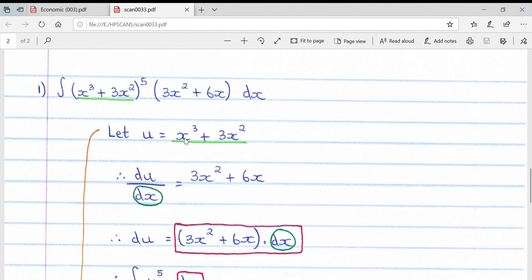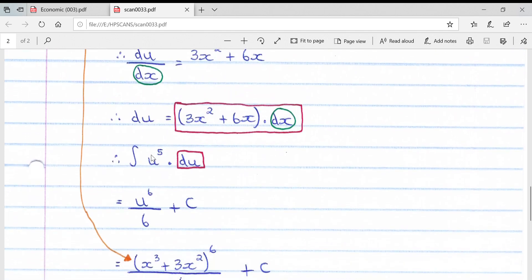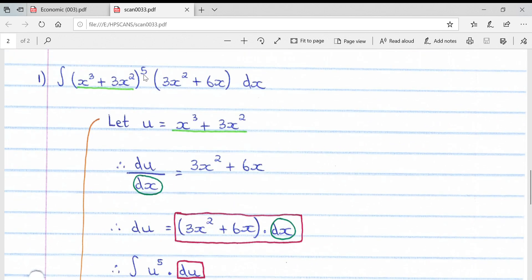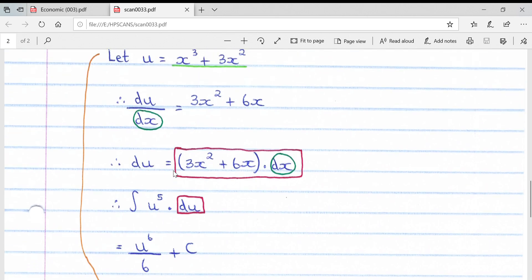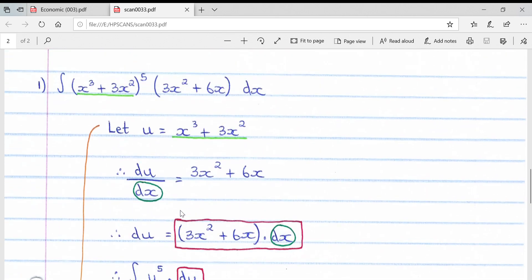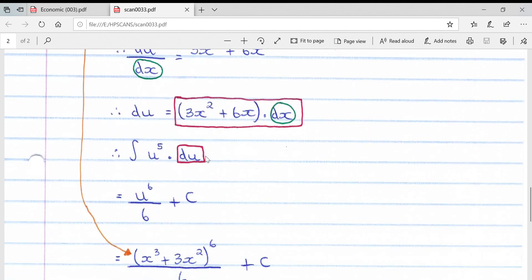Multiplied by du. Remember, du is equal to this whole bracket and the dx. What do we get at the top? We get this whole bracket and the dx, so that essentially just becomes the du. Then we multiply by the du.